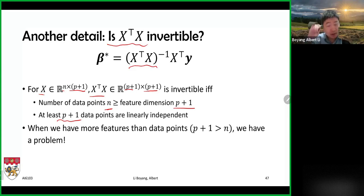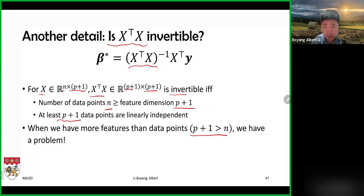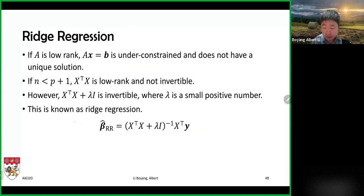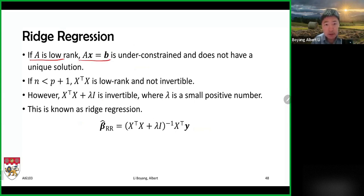Sometimes we have fewer data points than features — fewer data points than parameters to estimate — so the matrix may not be invertible. If A is low rank, then the inverse doesn't exist. You can understand this as the set of linear equations being under-constrained, so you could have more than one solution and therefore no unique solution.